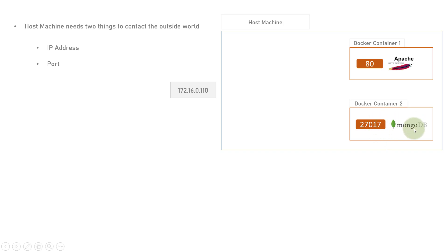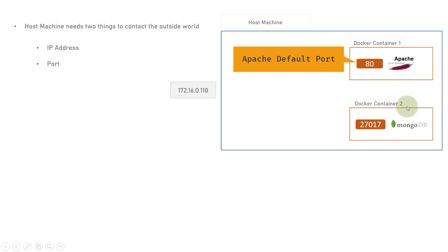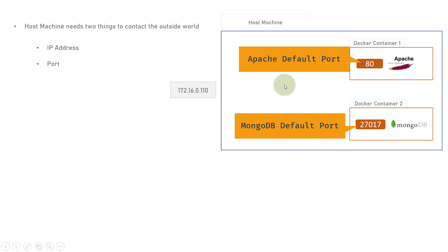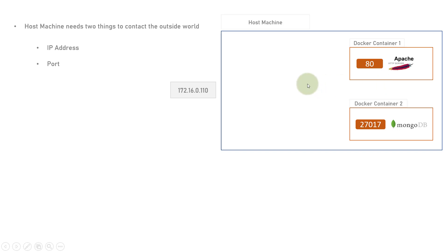Let's say there is another Docker container running MongoDB. The default port on which MongoDB runs is 27017, and in Docker container 1 there is Apache HTTP server running on port 80. Both containers are present in this host machine, but the applications running inside are isolated from the host machine — meaning no one can access Docker container 1 or Docker container 2 applications without going inside the Docker container. You need to use the docker exec command to go inside and interact with these applications.